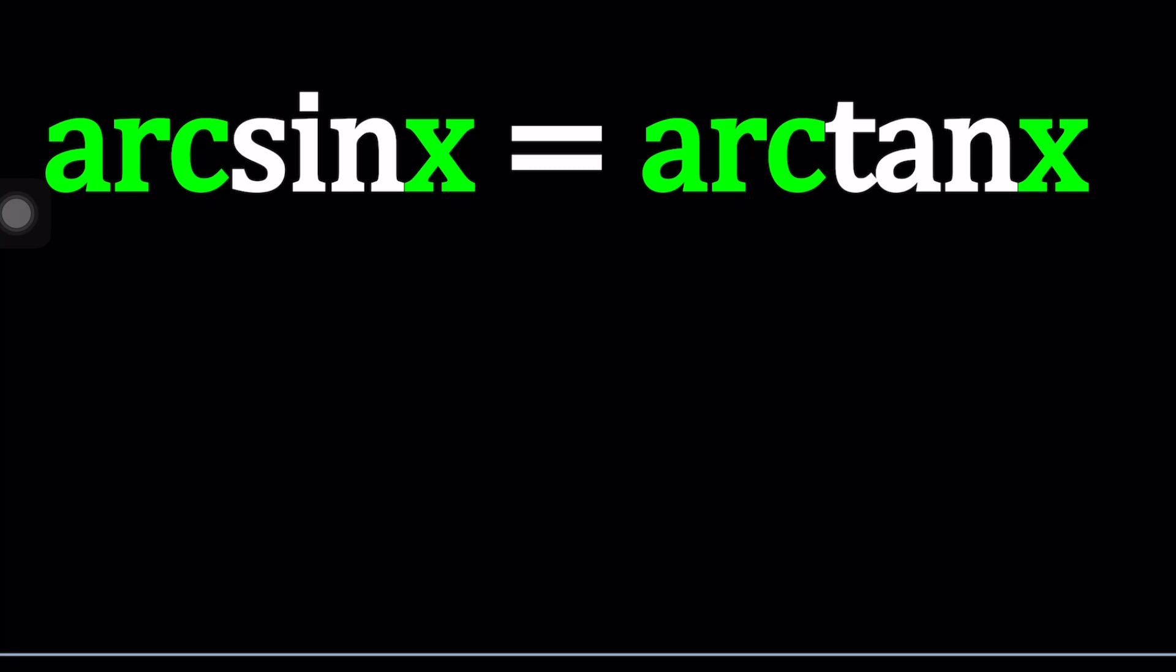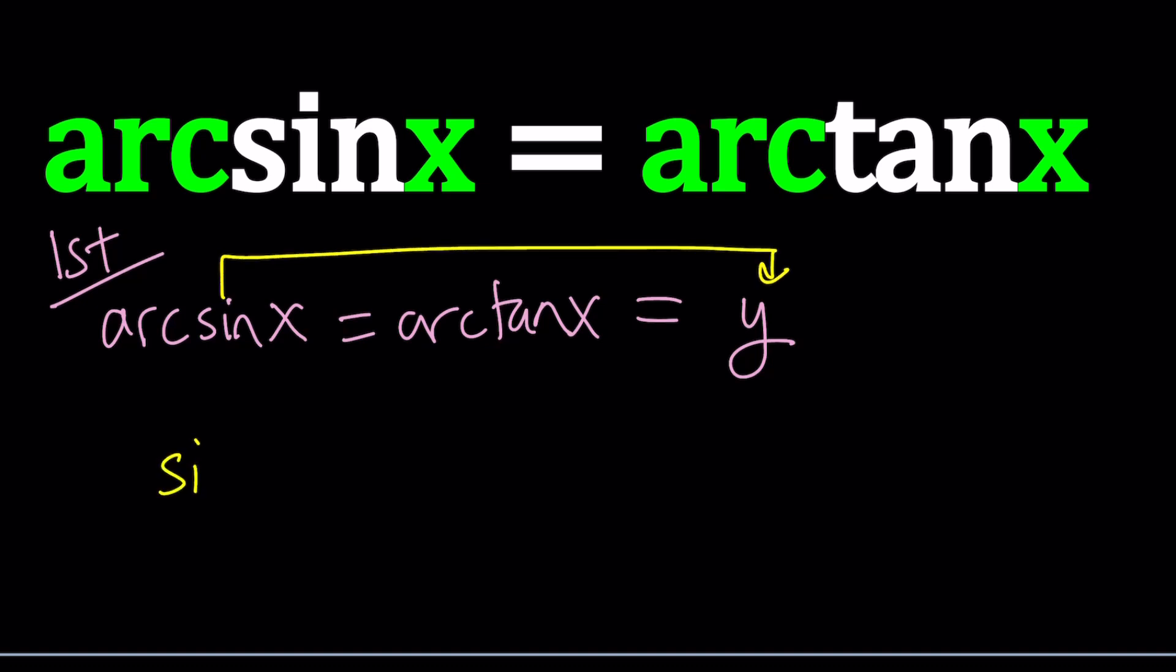So I'll start by setting both of these expressions equal to y. Let's call this the first method. I'll start by setting both of these equal to y, and then proceeding with the definition. If arcsin x is equal to y, that means sin y is equal to x. In other words, arcsin x means the angle whose sine equals x, and that, in this case, would be y.